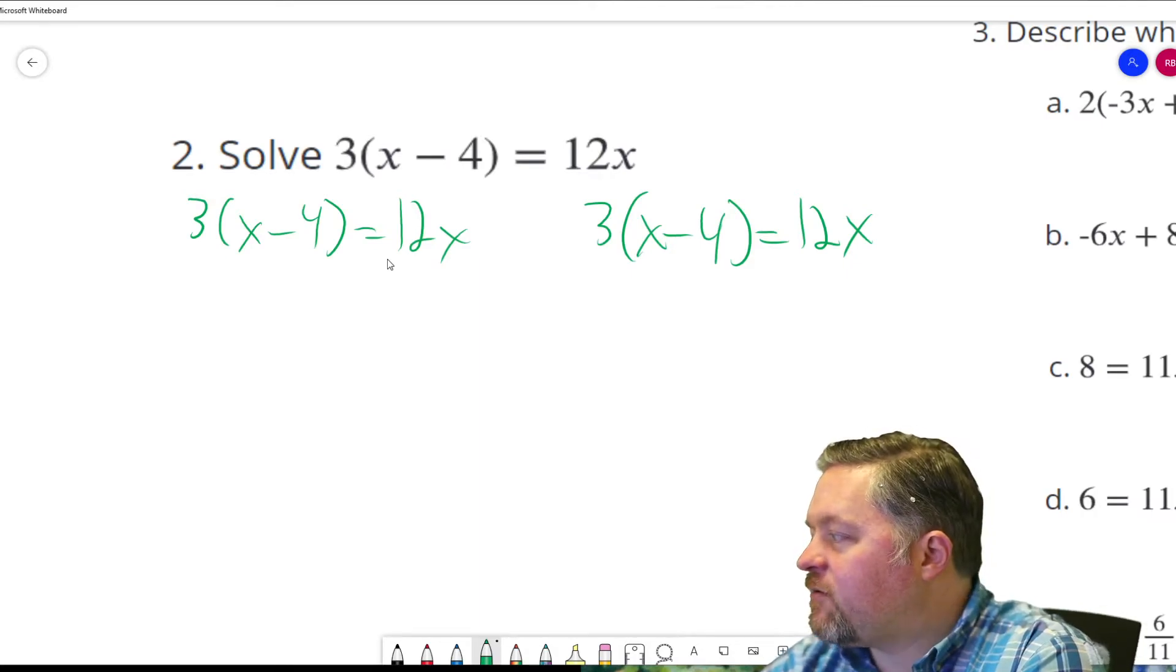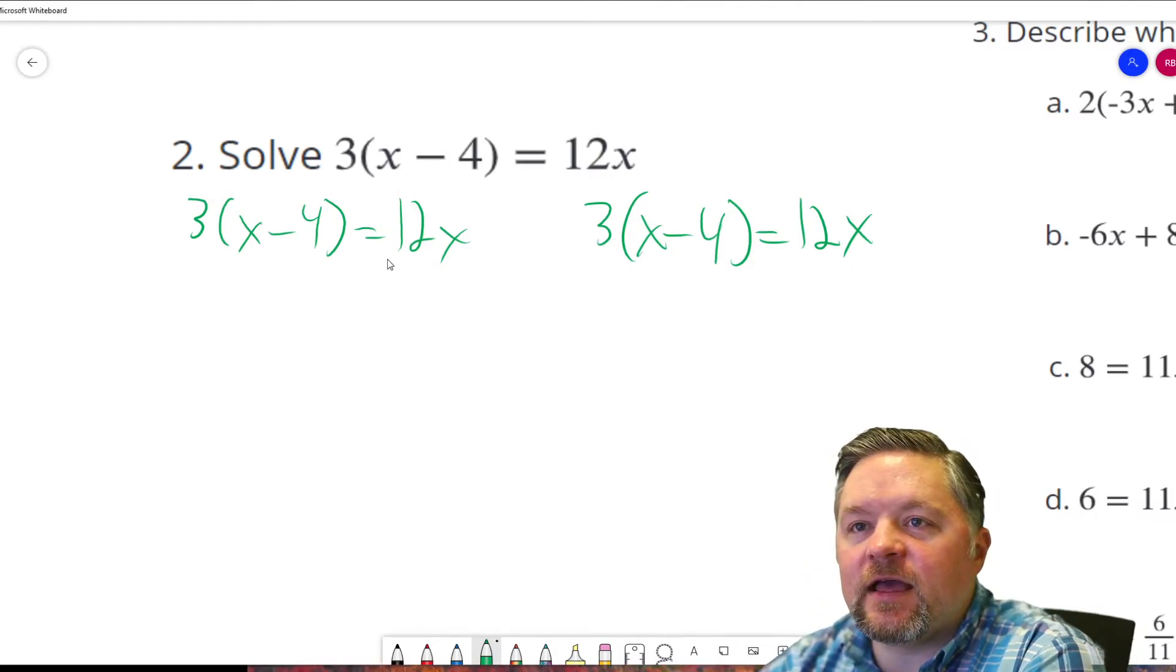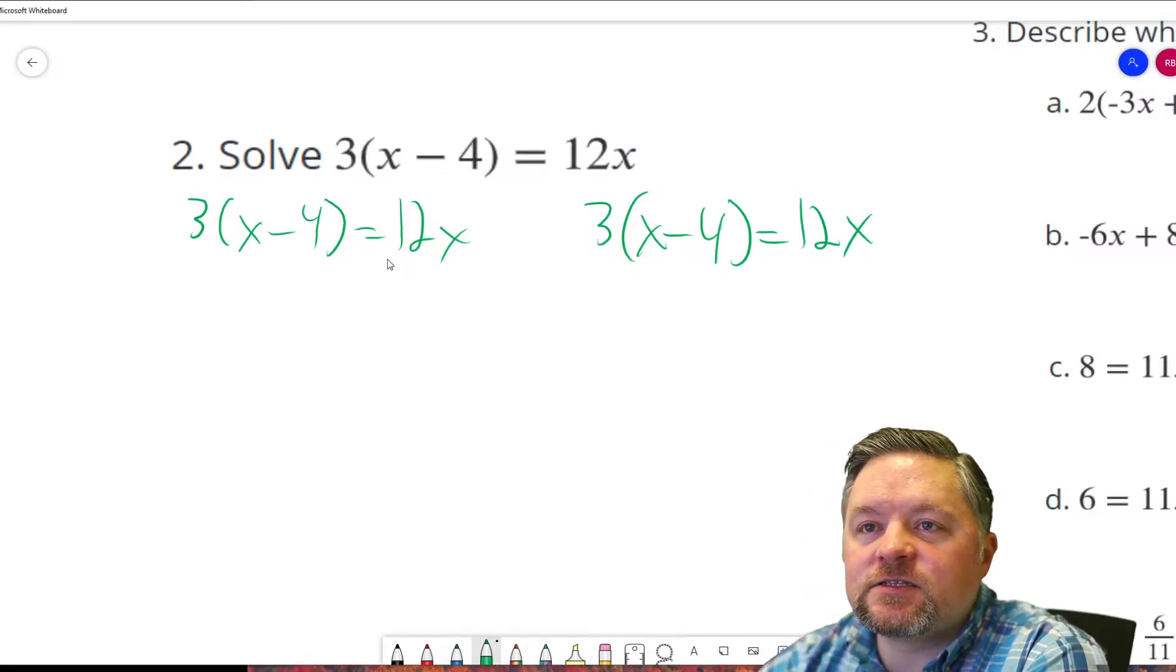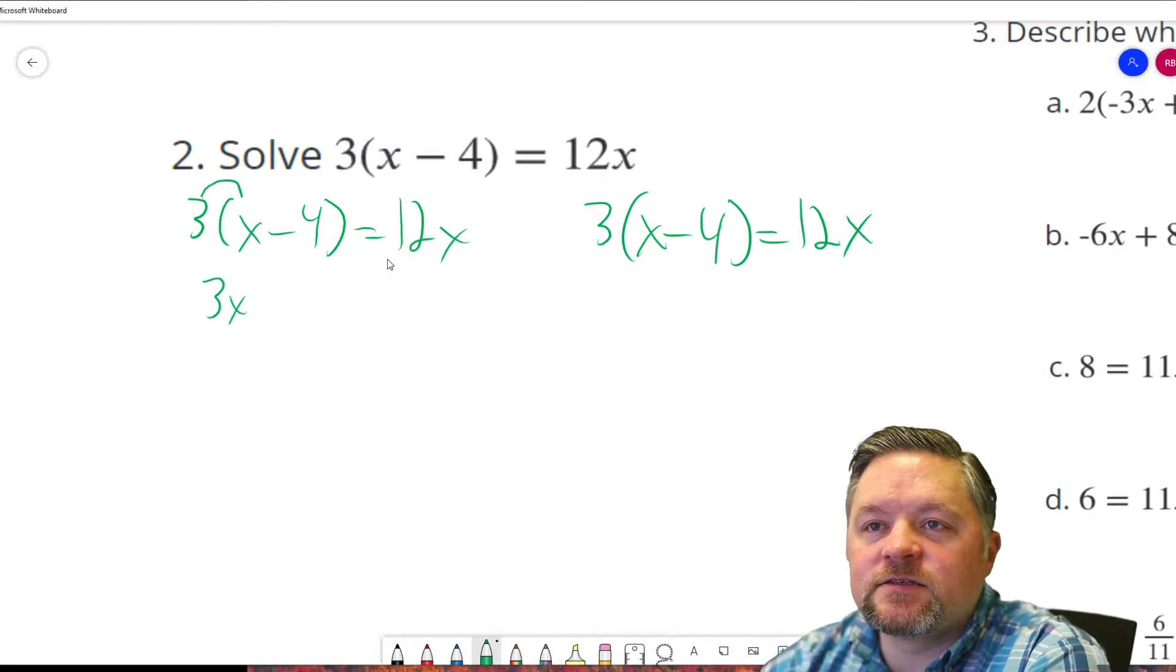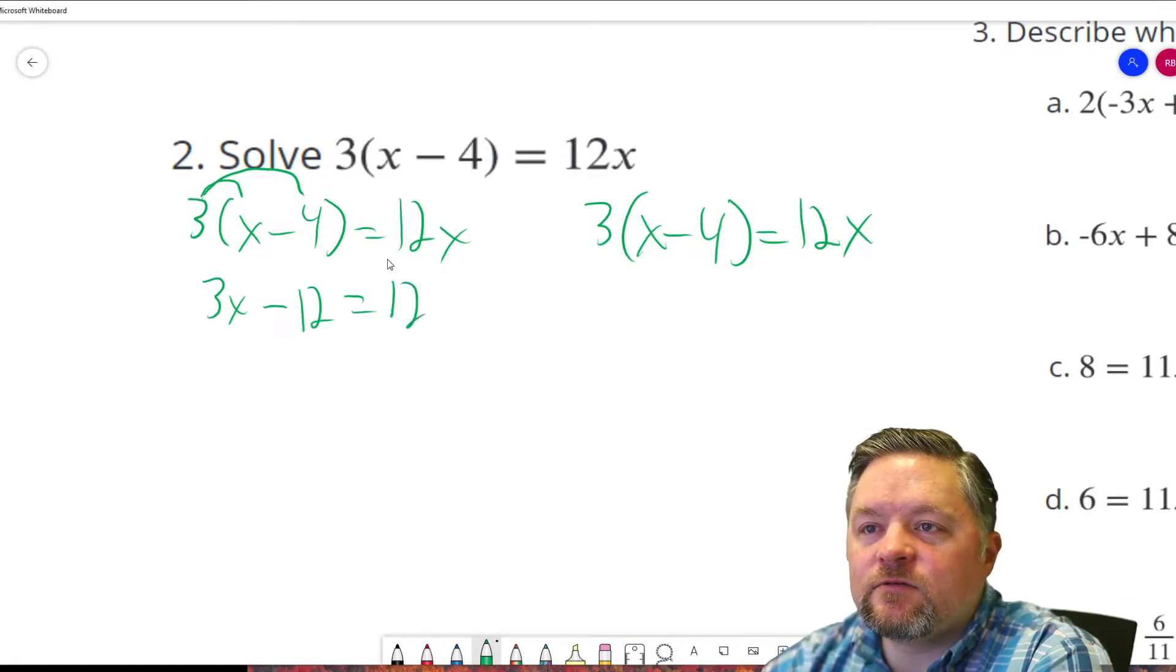We have some parentheses going on here, and we can't deal with what's in the parentheses until we've dealt with what's outside of the parentheses. So how are we going to go about doing that? Well, first, what I think is, let's distribute. 3 times x is 3x. 3 times negative 4 is negative 12. Equals 12x, because we didn't do anything to that side.